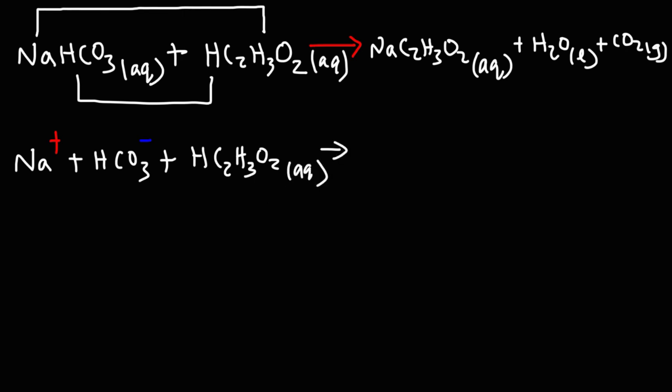Sodium acetate completely dissociates in water. So we can break that up into Na+, and C2H3O2-. Now, water is not in the aqueous phase. It's liquid, so we're going to leave that alone. And the same is true for gaseous carbon dioxide. So this is the total ionic equation.